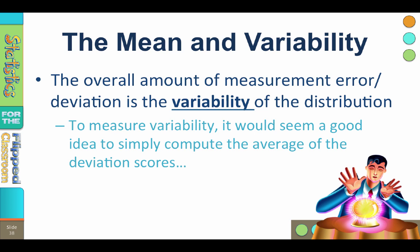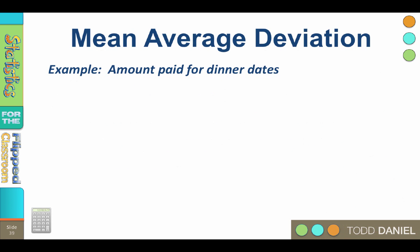Using what we know about averages, adding up scores and dividing by the total number of scores, to measure variability it would seem a good idea to simply compute the average of the deviation scores, and this approach is called mean average deviation.